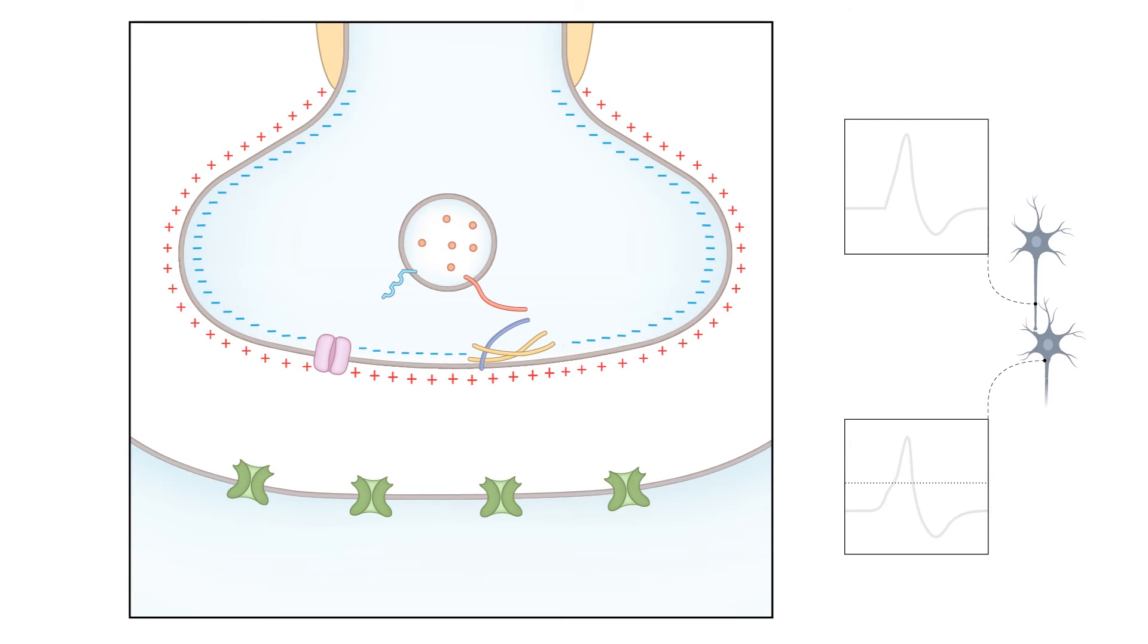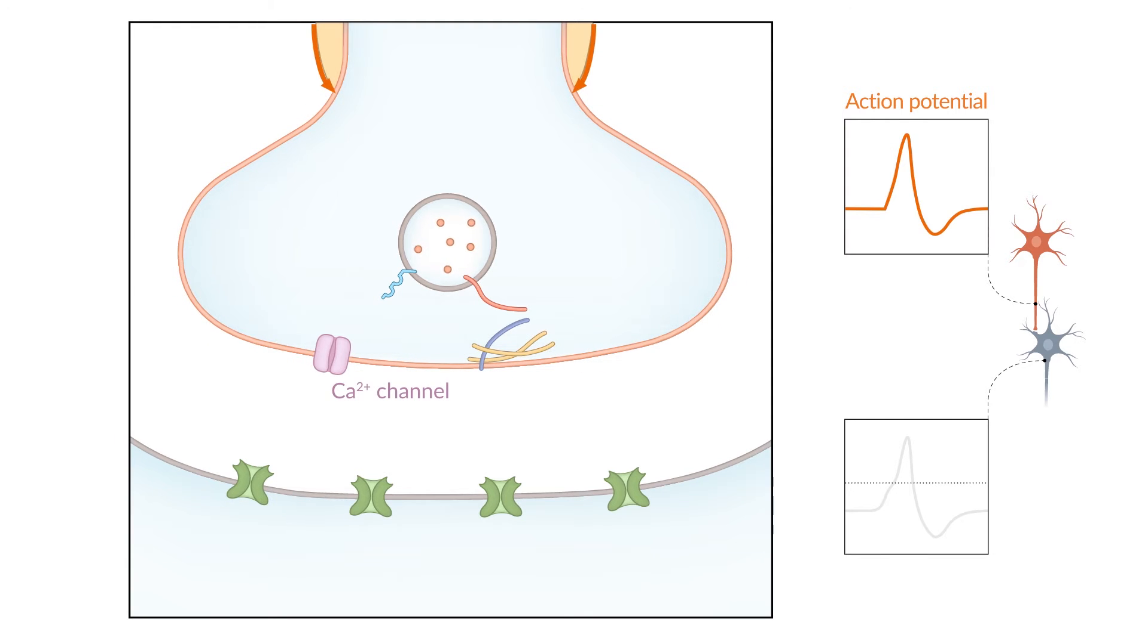When an action potential reaches the presynaptic membrane, depolarization occurs. As a result, the voltage-gated calcium channels at the presynaptic terminal open, leading to the influx of calcium cations into the cell.